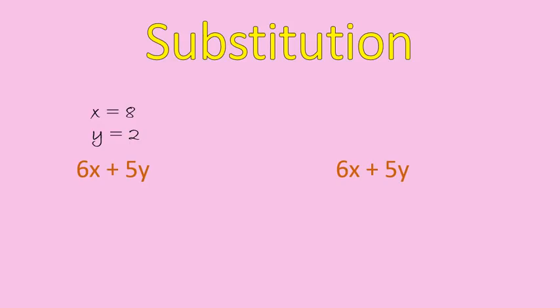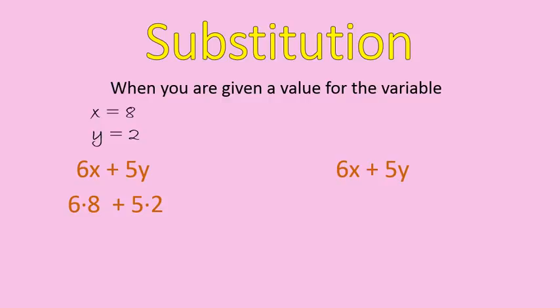So let's go ahead and substitute to solve a couple of these multi-step expressions. The first one we're going to do is 6x plus 5y, when we're given that x equals 8 and y equals 2. The first step is that I substitute 8 in for x and 2 in for y. And then I do the multiplication, 6 times 8 is 48, 5 times 2 is 10. Then we do our addition. You are always following the order of operations. So we'll do our multiplication before we do our addition, and that is always the case, unless it's inside of parentheses.